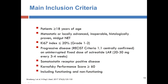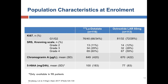Inclusion criteria were adults with well-differentiated grade 1 or 2 mid-gut neuroendocrine tumors who had disease progression on standard-dose sandostatin — that progression could have occurred over as long as three years — and all had to have evidence of somatostatin receptor expression on OctreoScan. Most patients had low-grade tumors, but about one-third were intermediate grade. Most had very strong uptake on OctreoScan, and an average patient had very high levels of chromogranin and 5-hydroxyindoleacetic acid, which is not surprising for this population.